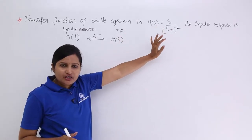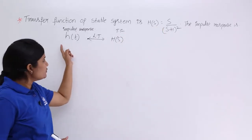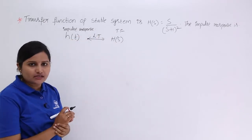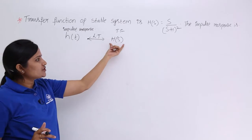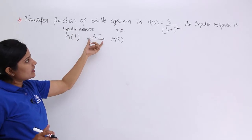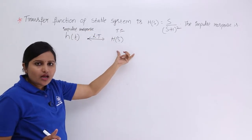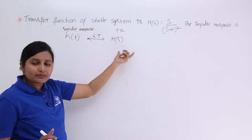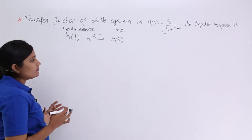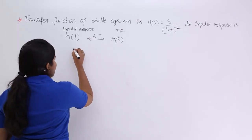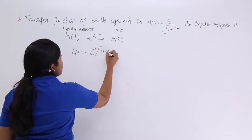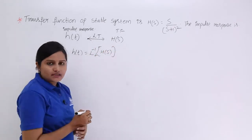Here they have given our transfer function in the s-domain. We need to take the relation: h(t) is the inverse Laplace transform of H(s). Since they have given H(s), we need to find h(t). If they had given h(t), by taking the Laplace transform you would get the transfer function. But the reverse is given — they have given the transfer function and we need to find the impulse response, which we do by taking the inverse Laplace transform of H(s).